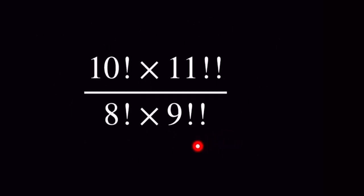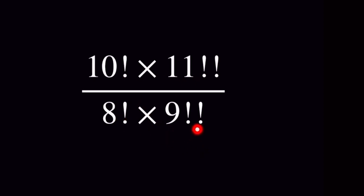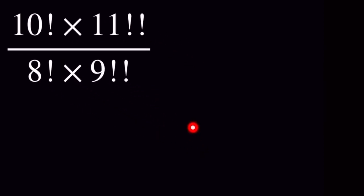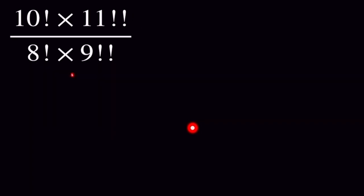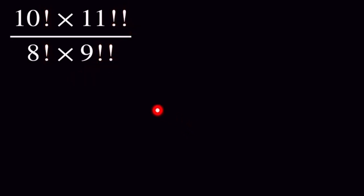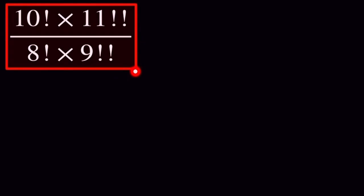Hello everyone, today we are going to solve this question. Can you solve this question? If you can, then pause the video and take a try, otherwise let's see the solution. So this is our question: 10 factorial into 11 double factorial divided by 8 factorial into 9 double factorial. Here are some rules, so let's see those rules.